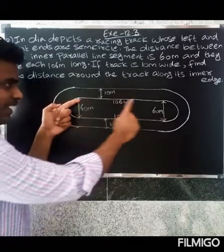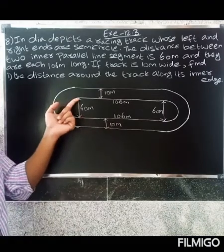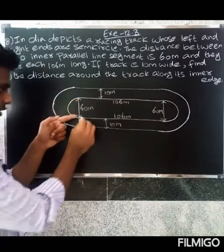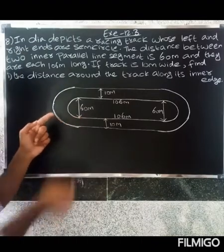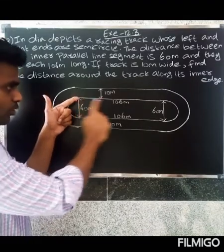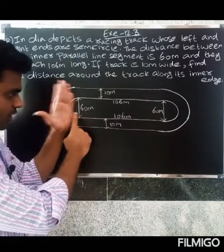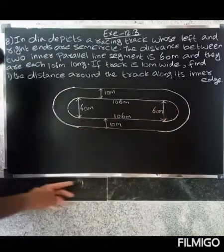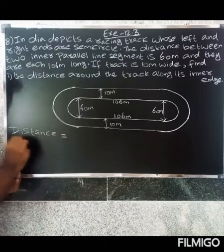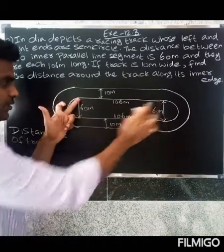So first, find the distance around the track along its inner edge. The distance of the track equals the length of the two straight inner segments. Each is 106 meters, so we have 106 plus 106 here. We also have a semicircle on each end.